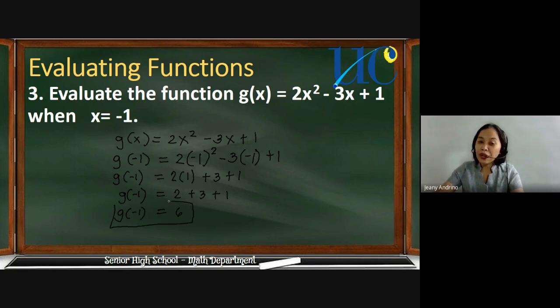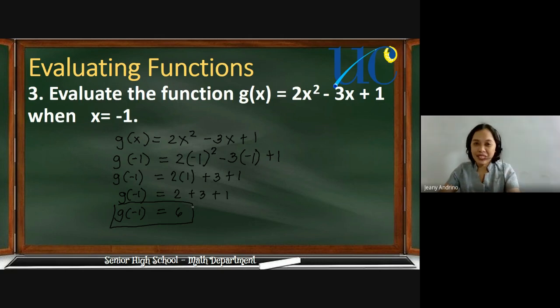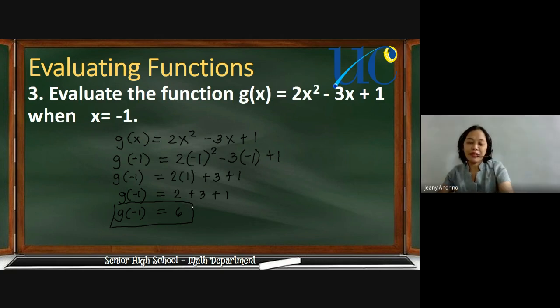Take note: g(−1) is our output variable. More generally, g(x) is the output variable of this function.